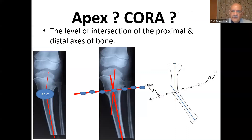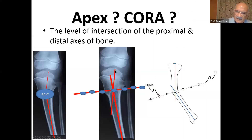The apex of the deformity — the CORA — is at the level of intersection of the proximal and the distal axis of the bone. If you draw the proximal anatomical axis and the distal anatomical axis, they meet each other in the middle, and we draw the transverse bisecting line. Any point over this line is considered a CORA, so they are all CORAs.